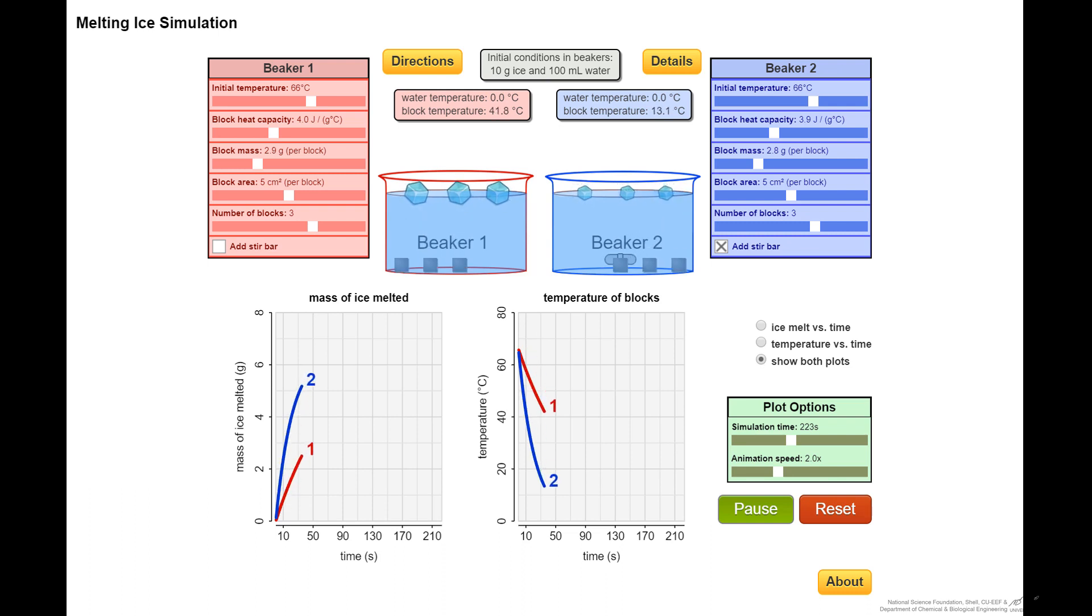And notice the effect of the stir bar is that we much more quickly melt the ice. We much more quickly get to zero degrees C. We've increased the heat transfer coefficient. And if we let it run long enough, we start seeing at least for the beaker, the blue beaker with the stirring, we reach the final conditions, we reach equilibrium.